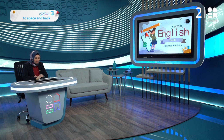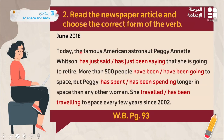Now a newspaper article exercise from the workbook page 93. 'Today the famous American astronaut Peggy Whitson has just said / has just been saying that she's going to retire.' The keyword here is 'just', which is used with the present perfect. The meaning is that she just finished saying it — the action is completed. So the correct answer is: 'has just said.'